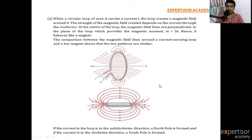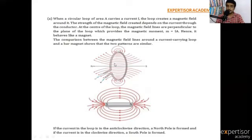Next: magnetic field around a circular wire or circular loop. When a circular loop of area capital A carries a current, the loop creates a magnetic field around it. When current passes through this conductor, the magnetic field is created around this loop.